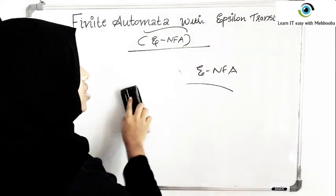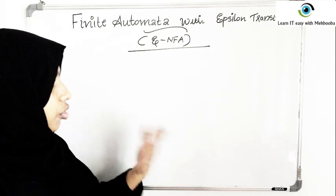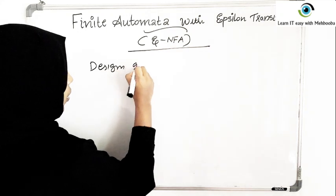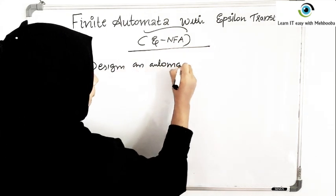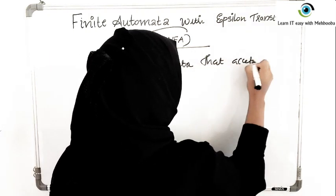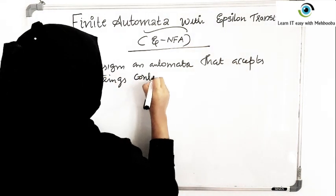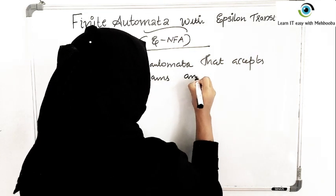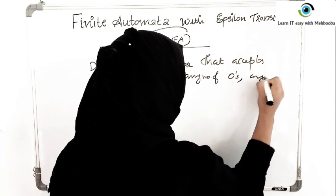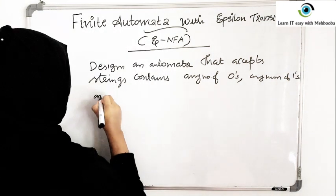I will show you an example where drawing an epsilon NFA is much easier. Try to draw the NFA for this problem first. The question is: design an automaton that accepts strings containing any number of zeros followed by any number of ones followed by any number of twos.